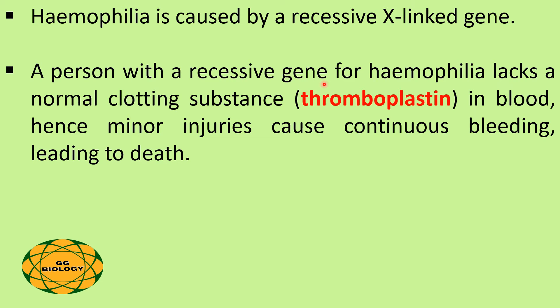A person with the recessive gene in the X chromosome for hemophilia lacks a normal clotting substance called thromboplastin in blood. Hence minor injuries cause continuous bleeding leading to death.